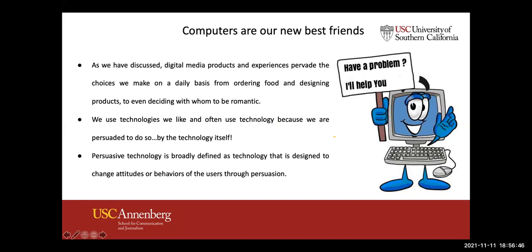Fogg argues that computers do all kinds of things for us now — things that we never imagined they would do, from ordering food to designing products for us, deciding who we should date. They are just our best friends, and we're persuaded to make decisions by the technology itself, sometimes persuaded to use the technology by the technology itself.